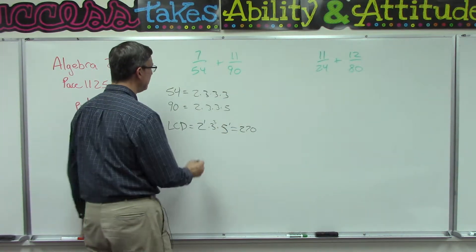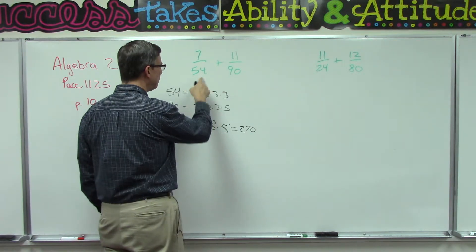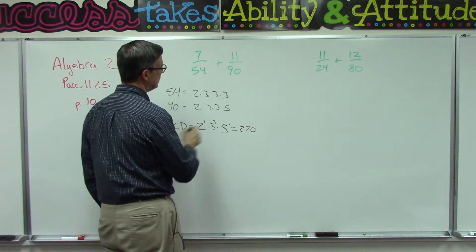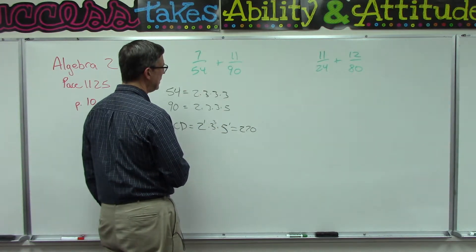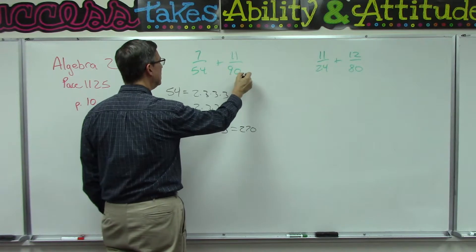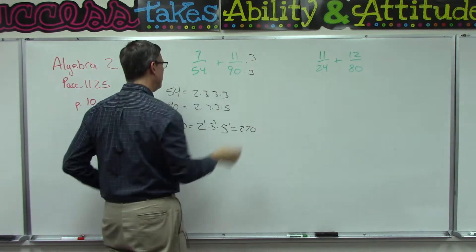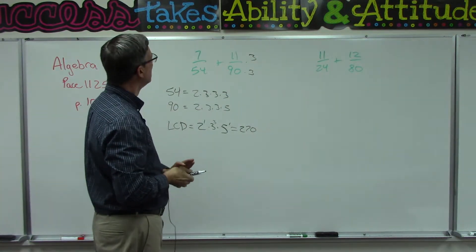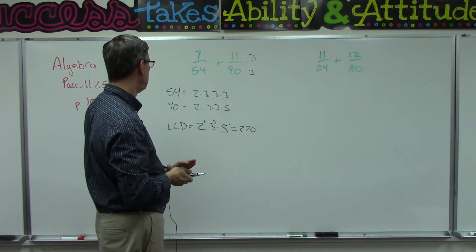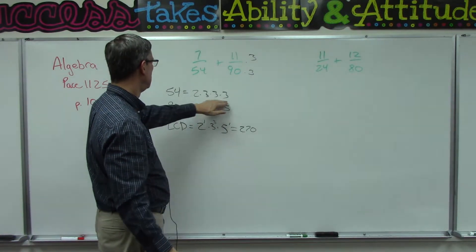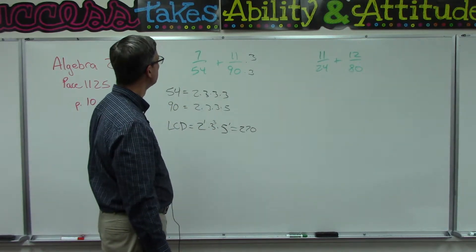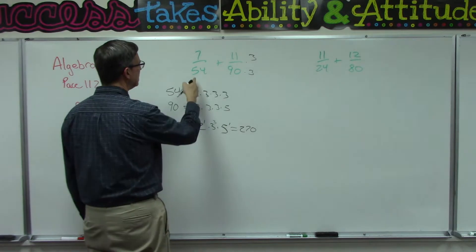So now we need to rewrite these having this common denominator of 270. We ask ourselves, what would I have to multiply times 54 to get 270? And then what would I have to multiply times 90 to get 270? That one's easier, I know that's 3. 54 would be, let's see, looks like it's missing just the 5.